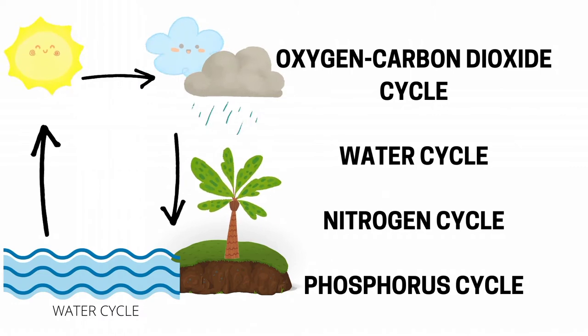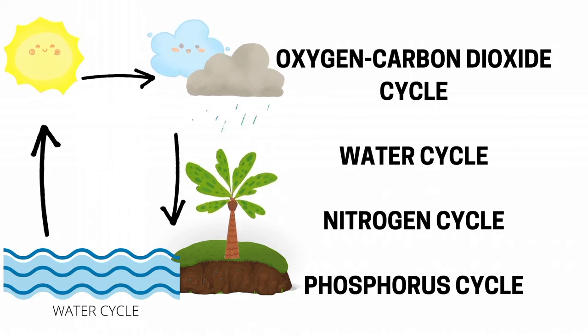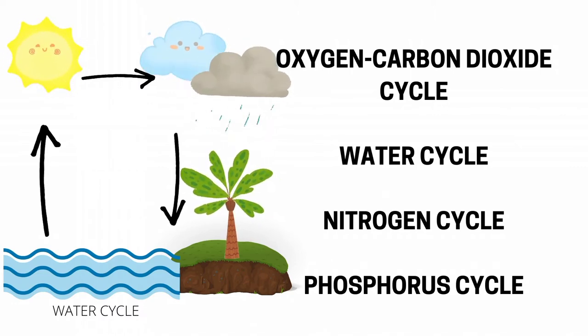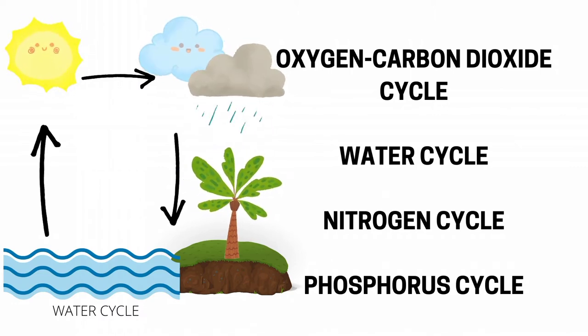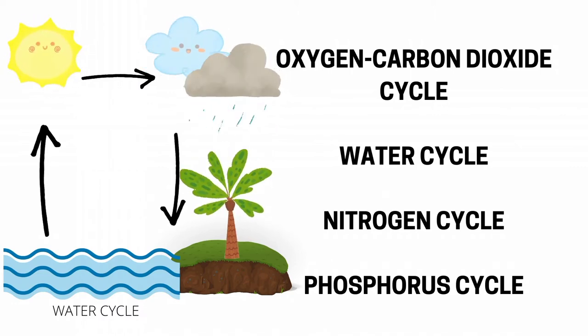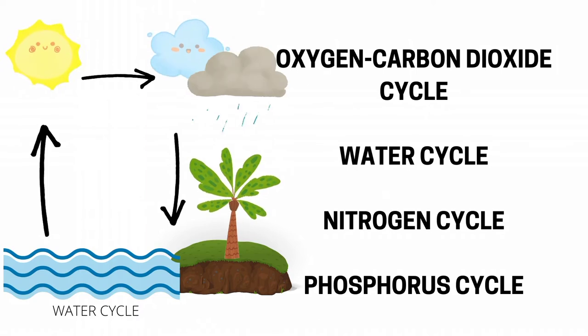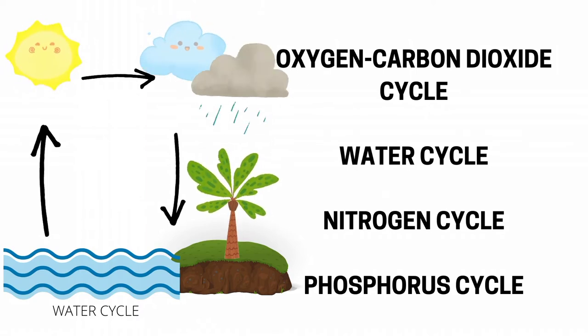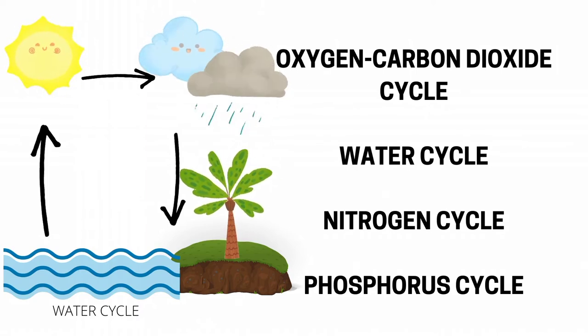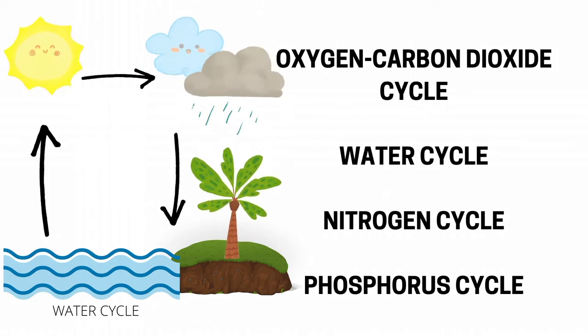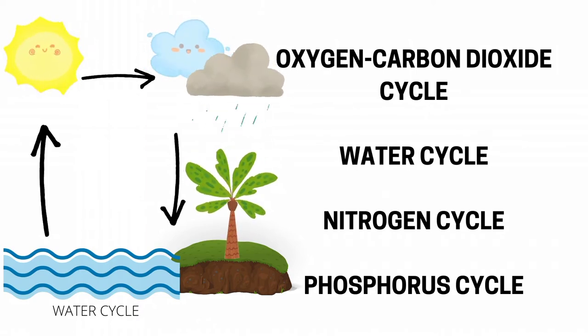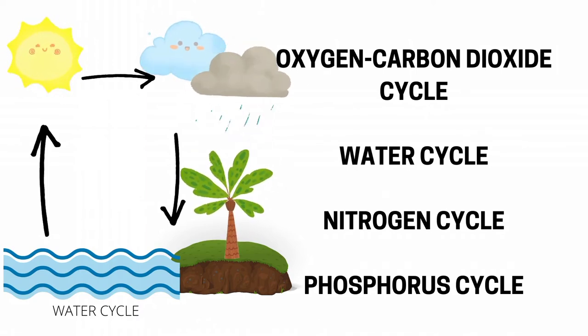In a well-balanced ecosystem, four main material cycles usually occur, namely: the oxygen-carbon dioxide cycle, the water cycle, the nitrogen cycle, and the phosphorus cycle.